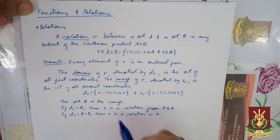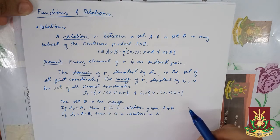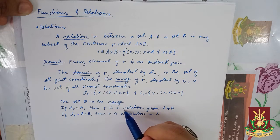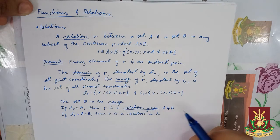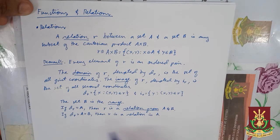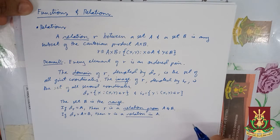Here, the set B is called the range. When D sub R equals A, then R is said to be a relation from A to B. Finally, if the domain of R is equal to A and A is equal to B, then R is simply a relation in A.